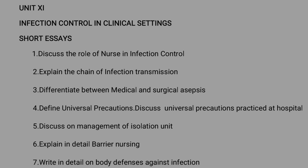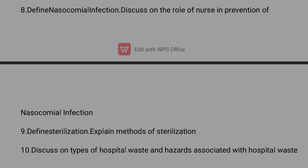Next, discuss the management of isolation unit. Then explain in detail barrier nursing. Write in detail on body defenses against infection. Define nosocomial infection and discuss the role of the nurse in prevention of nosocomial infection. Next, define sterilization and explain the methods of sterilization — this is a very important question.